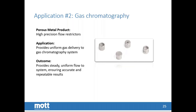For gas chromatography, primarily it's restrictors that are used to control the gas flow rates. The advantage is it provides a uniform gas delivery, so you get a steady uniform flow to the system ensuring accurate and repeatable results.